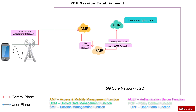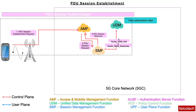Once the SMF gets the subscription data for the UE, it creates a session management context and sends a response back to the AMF. If the SMF is able to process the PDU session establishment request, it creates an SM context. After that, the SMF selects the PCF which will be associated with this particular PDU session. This completes the initial level of authentication between the core network elements.